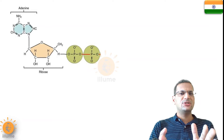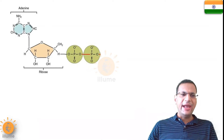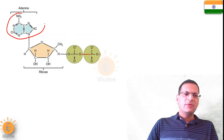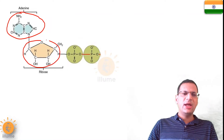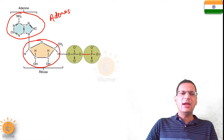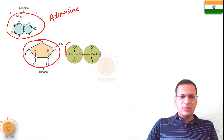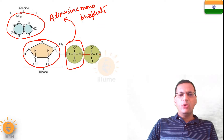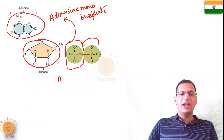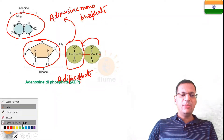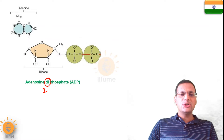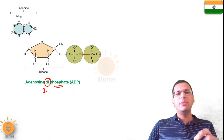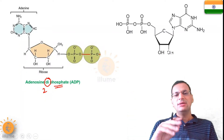Let me take the example of diphosphates first. This molecule is ADP. This is a nitrogenous base, adenine. When adenine gets attached to a ribose sugar it becomes adenosine, which is a nucleoside. When one phosphate group is attached to adenosine it becomes adenosine monophosphate, and when one more phosphate group is attached it becomes adenosine diphosphate. The word 'di' means two — two phosphate groups are attached to adenosine.